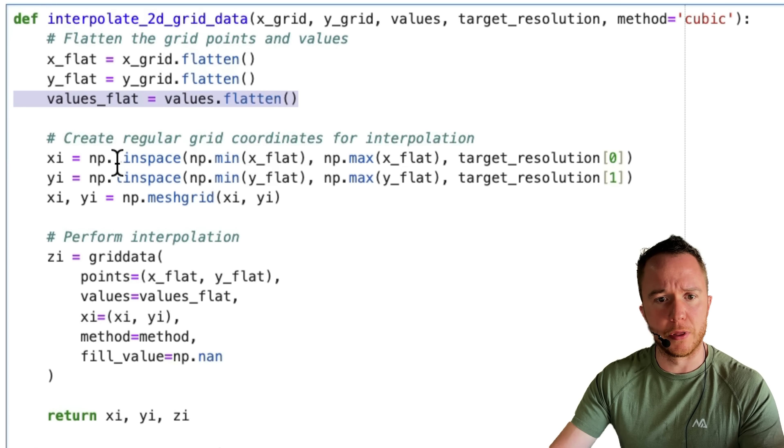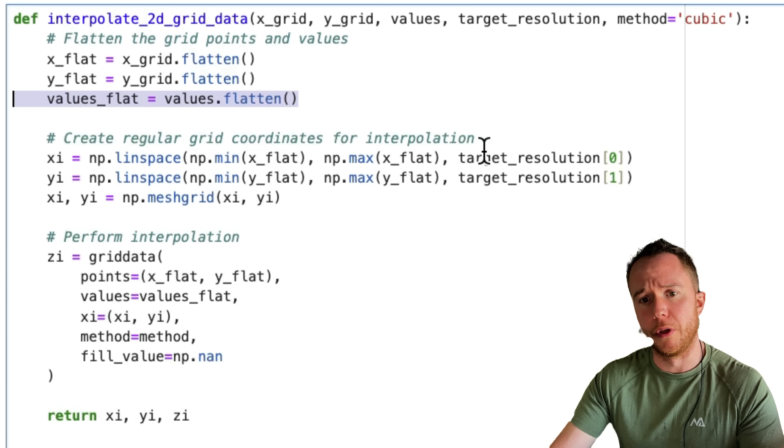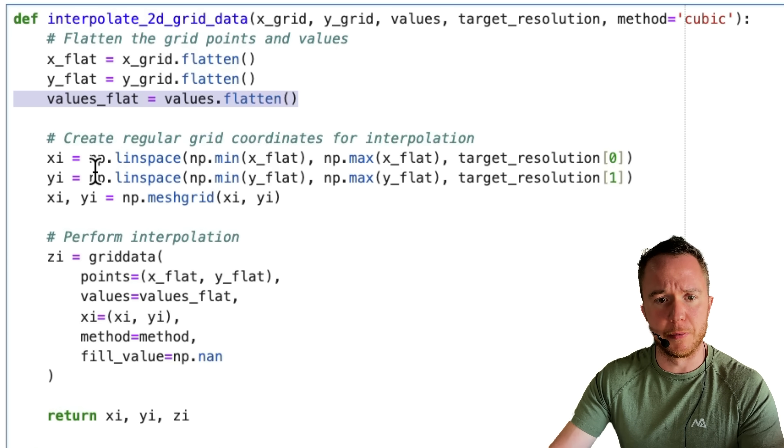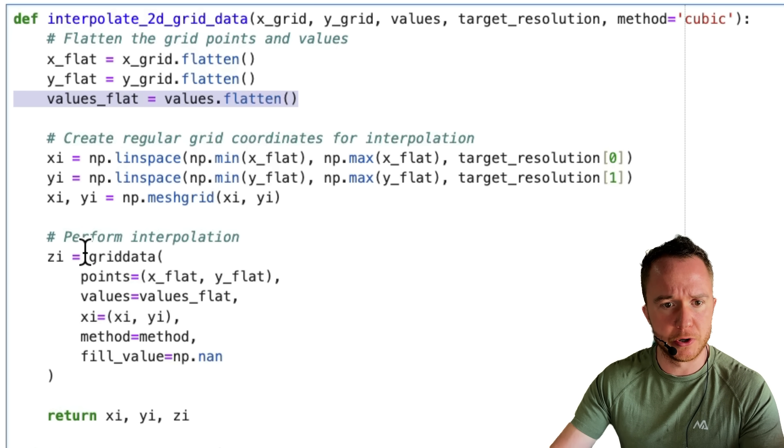Then, we create the new interpolation grids with linspace, so we go from the minimum of our x-grid to the maximum of our x-grid with the resolution that we chose, do the same thing for the y-values, and then create a mesh grid. And that is all the preparation we need in order to do the interpolation, so here's where the magic happens.